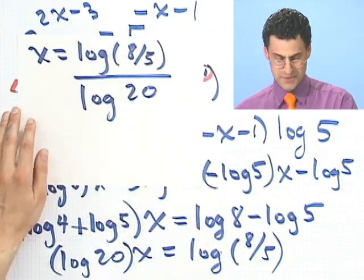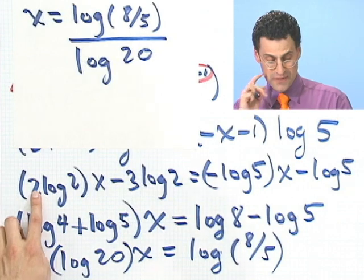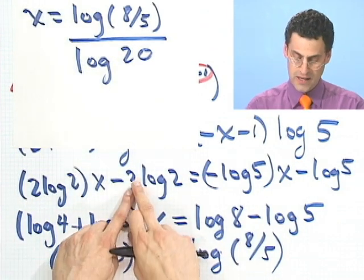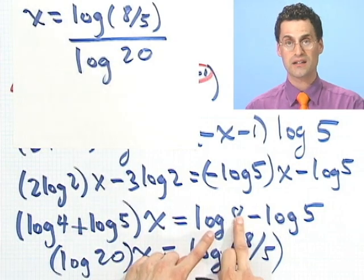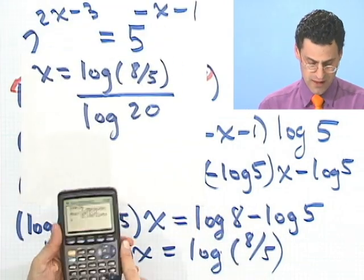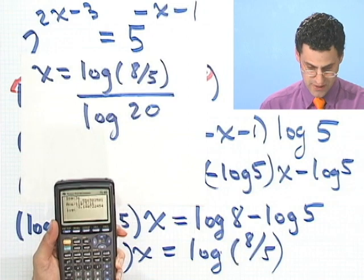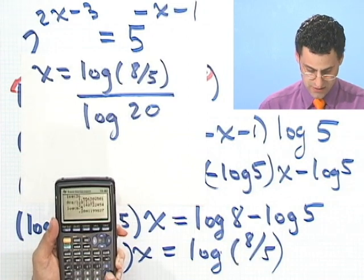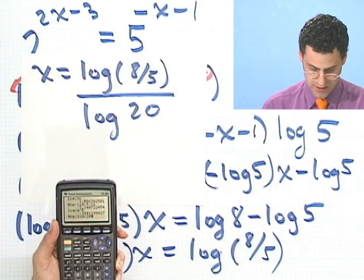Okay, do you see all the little steps there? There are a whole bunch of little teeny steps, like bringing the 2 up here as an exponent becomes a log 4. Bringing the 3 up here as an exponent becomes a log 8, and so on. But now there's the answer, and you can actually compute that away if you wanted to. Let's see if we can do that really fast. Log of 8 divided by 5, and I take that answer and divide it by log of 20.